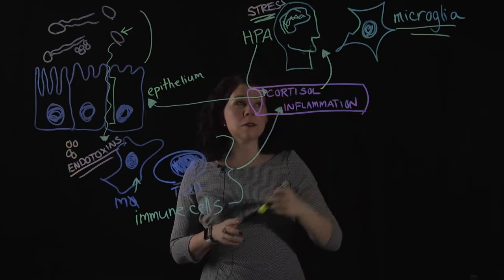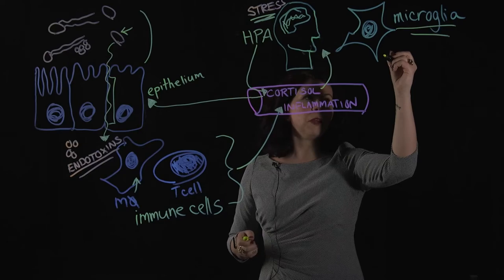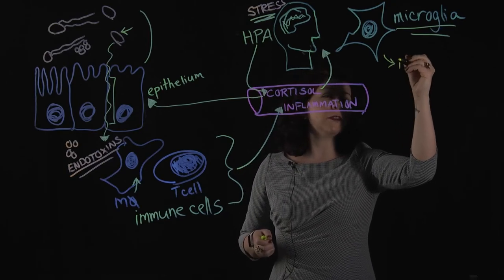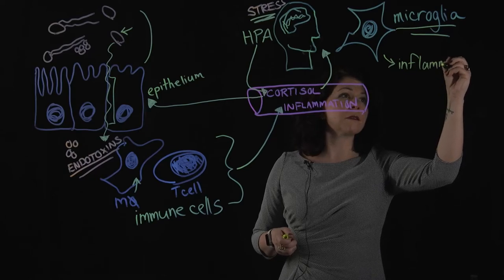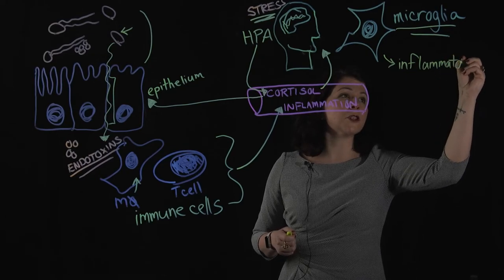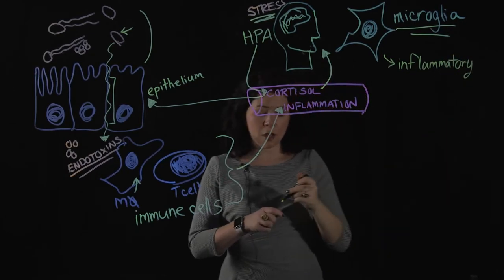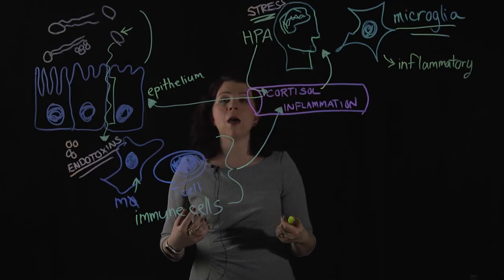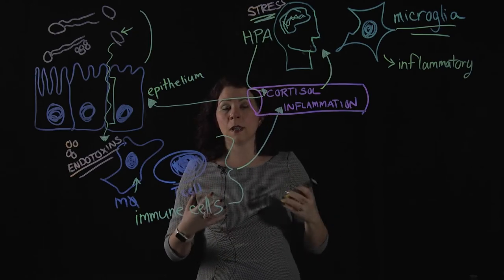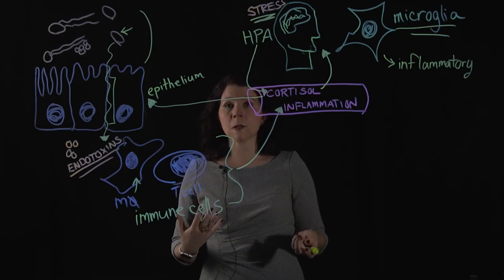The microglia respond a similar way to those macrophages. But now if they're being activated in the brain, they're going to do their own inflammatory response. But the problem with this is that inflammation in the brain is not good, and what can happen is that this can disrupt some of the normal signaling pathways that help maintain a healthy mental state.